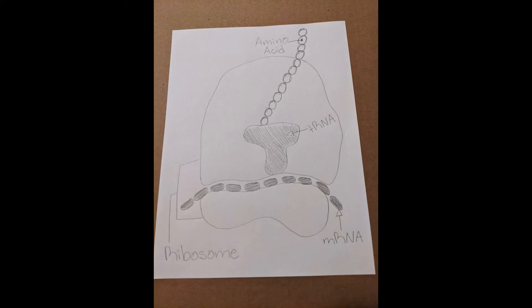For each RNA experiment, they would label one type of amino acid and put the mixture through the filter. This is where the radioactivity comes into play. The filter allowed unbound tRNAs to pass through, but prevented the ribosomes with bound triplets to move. The leftover ribosome and codon were then tested for radioactivity.